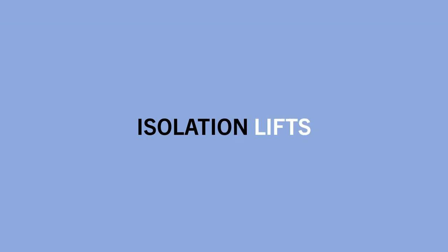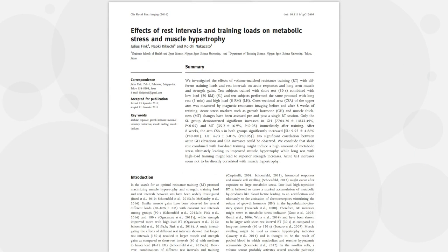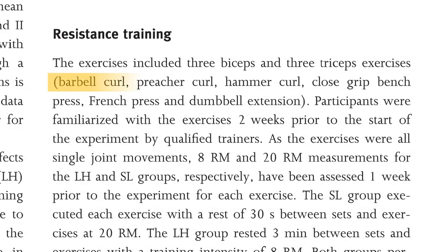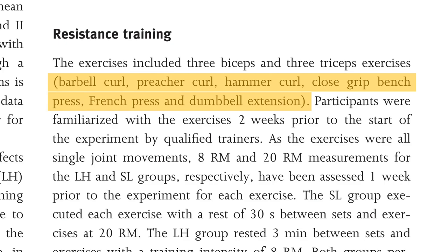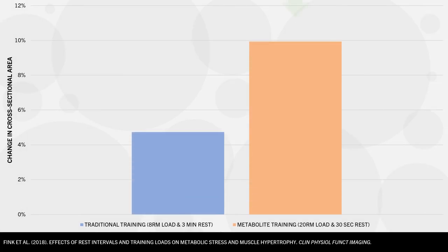However, when we look at the research on isolation lifts, the research tends to find different results. For example, this study explored the effects of arm training with different rep ranges and rest periods on biceps and triceps muscle growth. One group performed more traditional style training using an 8 rep max load with 3 minutes rest, while another group performed more metabolite style training using a 20 rep max load with 30 seconds rest. The exercises used in this study were all isolation lifts like bicep curls and tricep extensions, apart from the close grip bench press. The results showed that the short rest, high repetition group saw greater muscle growth after 8 weeks of training compared with the longer rest group. And this isn't the only study finding these results — there are a few other studies which find similar results with isolation lifts.